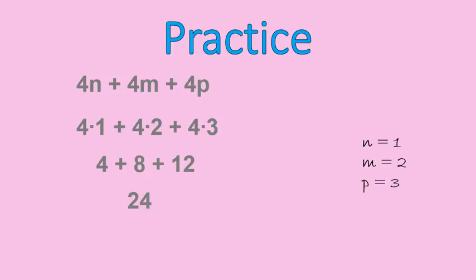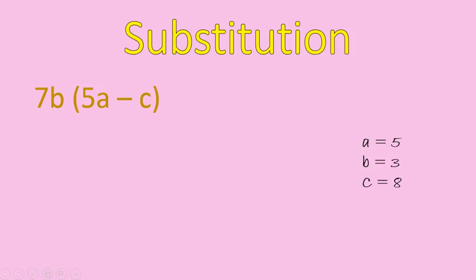In this next question, we have a couple more operations. 7b times the quantity of 5a minus c when a equals 5, b equals 3, and c equals 8. The first step is that we are going to substitute each number in for the variable. So, a equals 5, b equals 3, and c equals 8. Be careful because the letters are not in order. It doesn't go a, b, c in the actual expression. It's b, a, c. So, make sure that those are correctly placed in there.